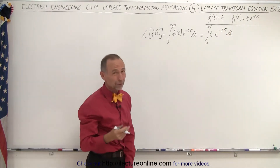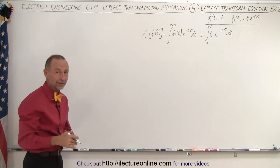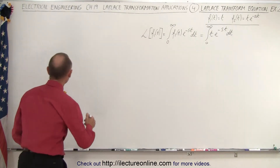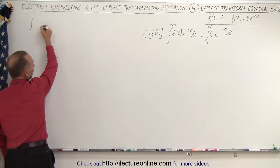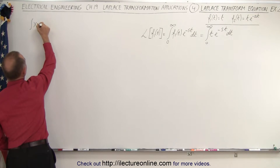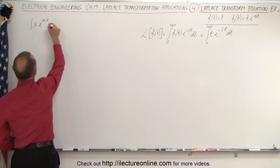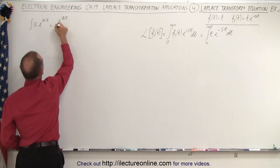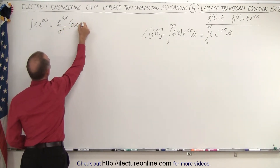Now you take a look at that integral and go, how do I do that integral? Well, you go to a table of integrals, or maybe you remember it. The integral of x e to the ax, in general, is equal to e to the ax divided by a squared times the quantity ax minus one.